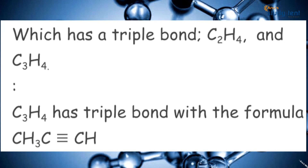C2H4 is CnH2n, so it is an alkene. C3H4 is CnH2n-2, that is C3H6-2, so it has a triple bond — making it an alkyne structure.